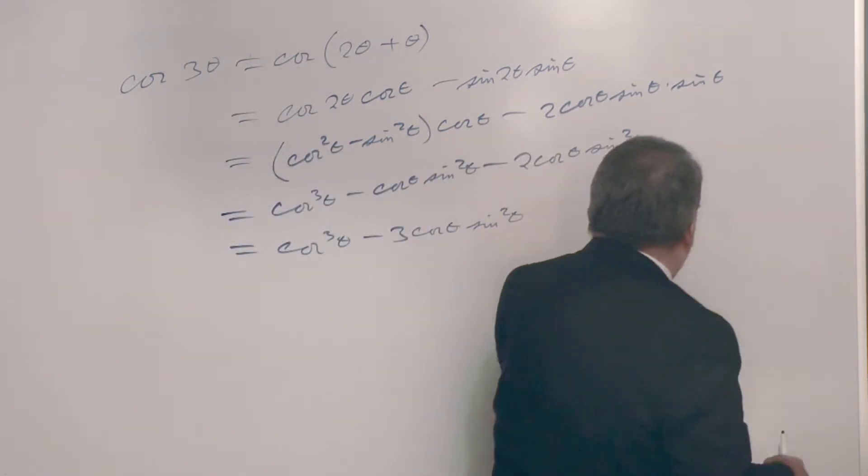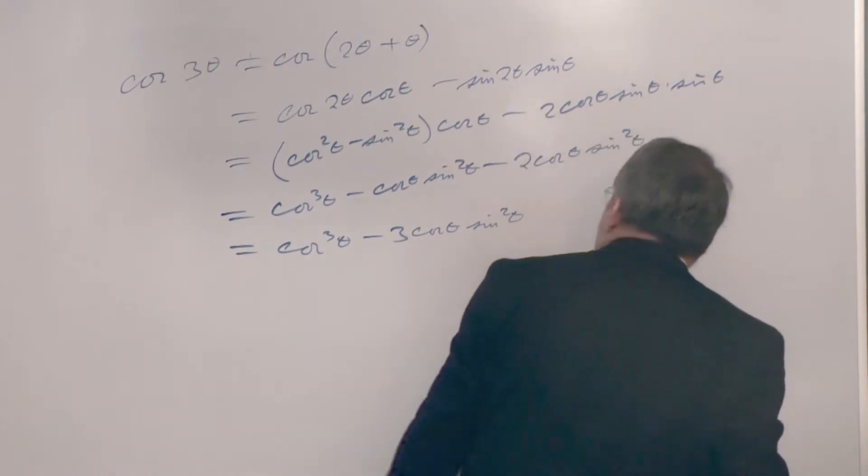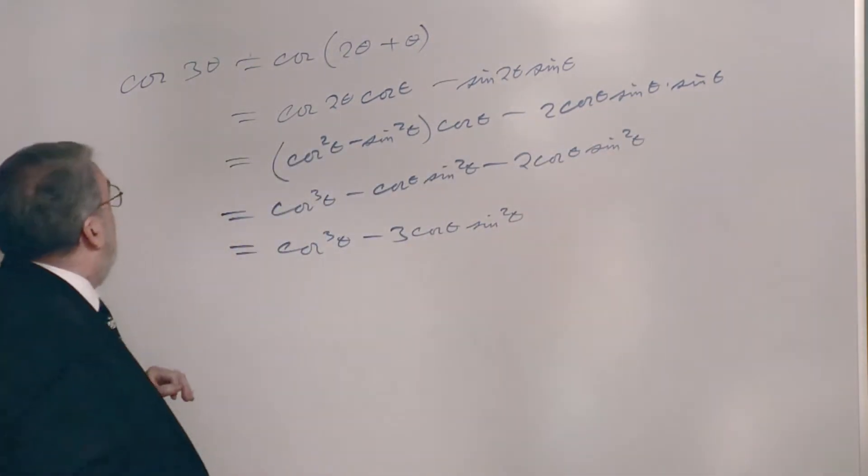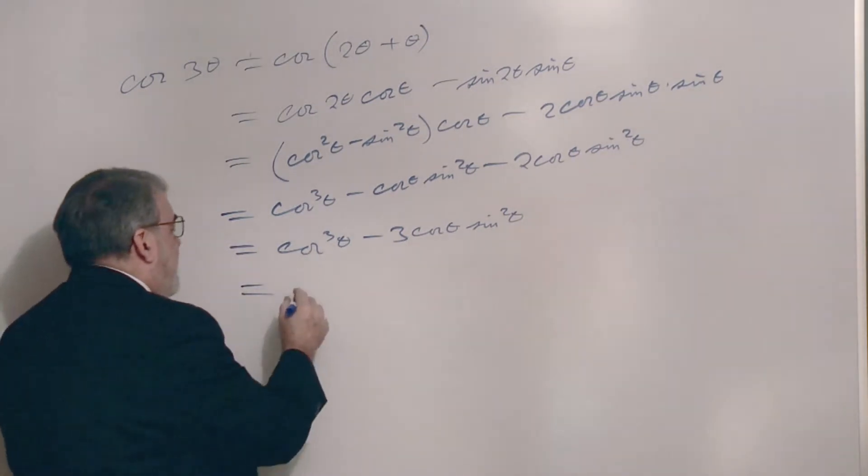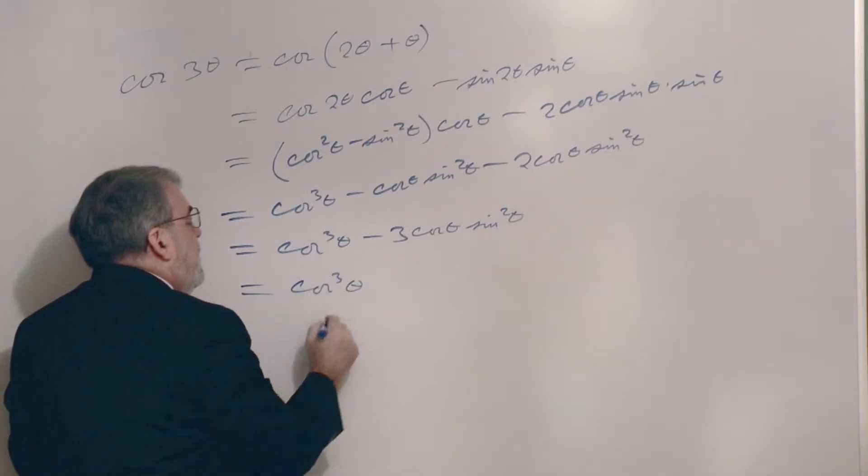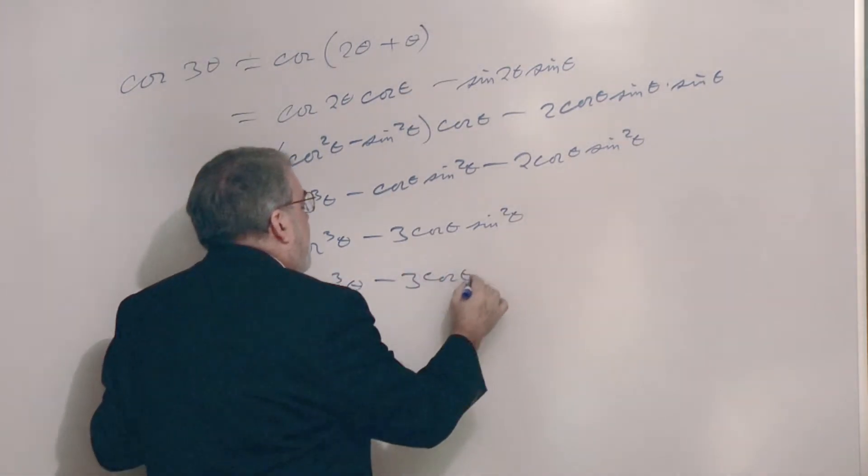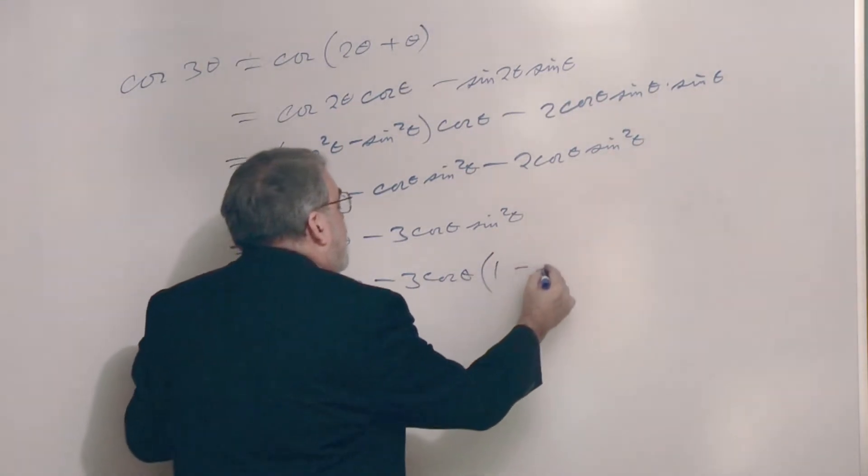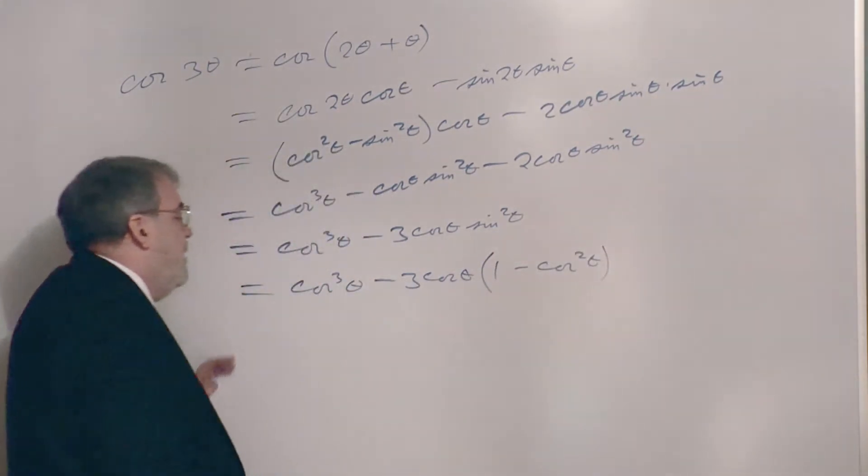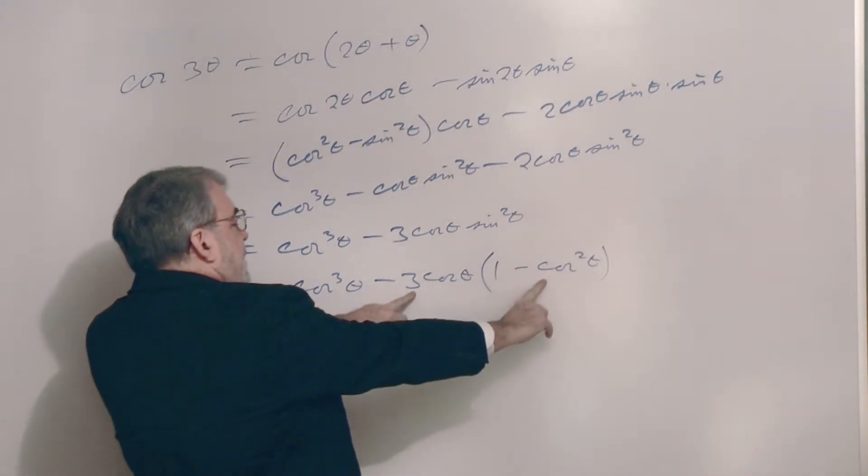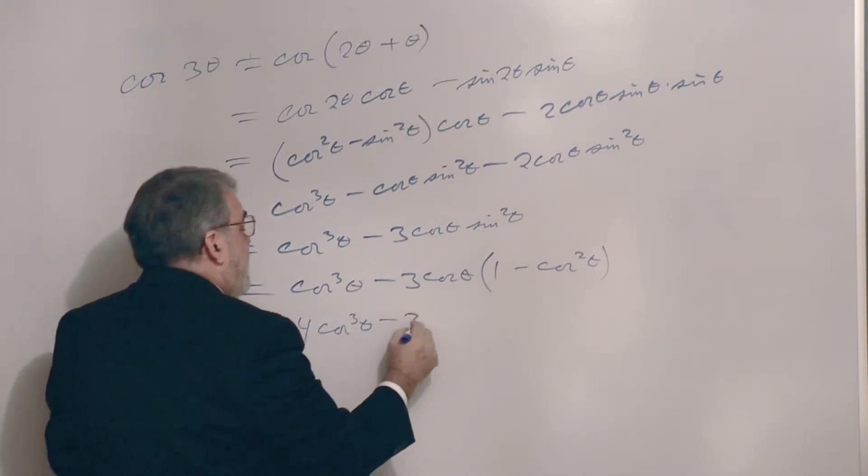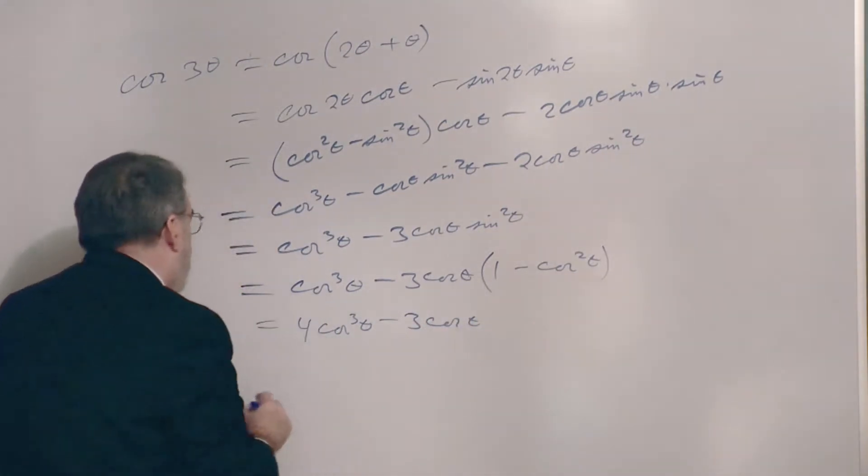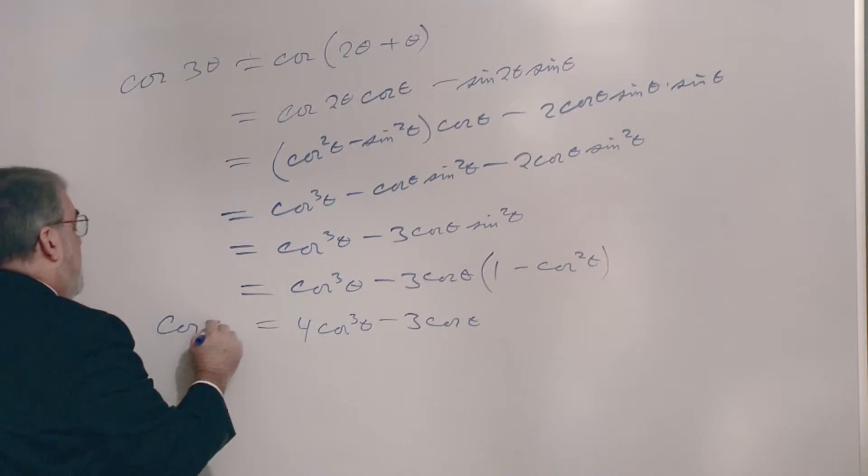I'm not totally happy with my formulation of cosine 3 theta because I want to write this only in terms of cosines. This is cosine cubed theta minus 3 cosine theta. What can I replace sine squared with? That's right, 1 minus cosine squared. So now I'm going to get positive 3 cosine cubed added to this one to make it 4 cosine cubed theta, and then minus this term, minus 3 cosine theta. So there we go, we have the cosine of 3 theta.